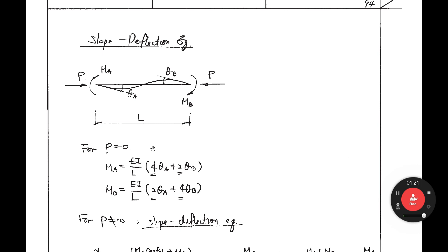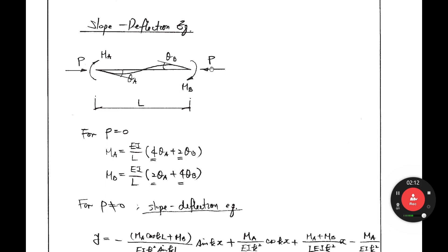For the case P equals zero: MA equals EI over L times (4ζA plus 2ζB), and MB can be written as EI over L times (2ζA plus 4ζB). I believe you already learned this equation in your undergraduate study — it is called the slope deflection equation. But in this course you have axial force P; P is not zero anymore.